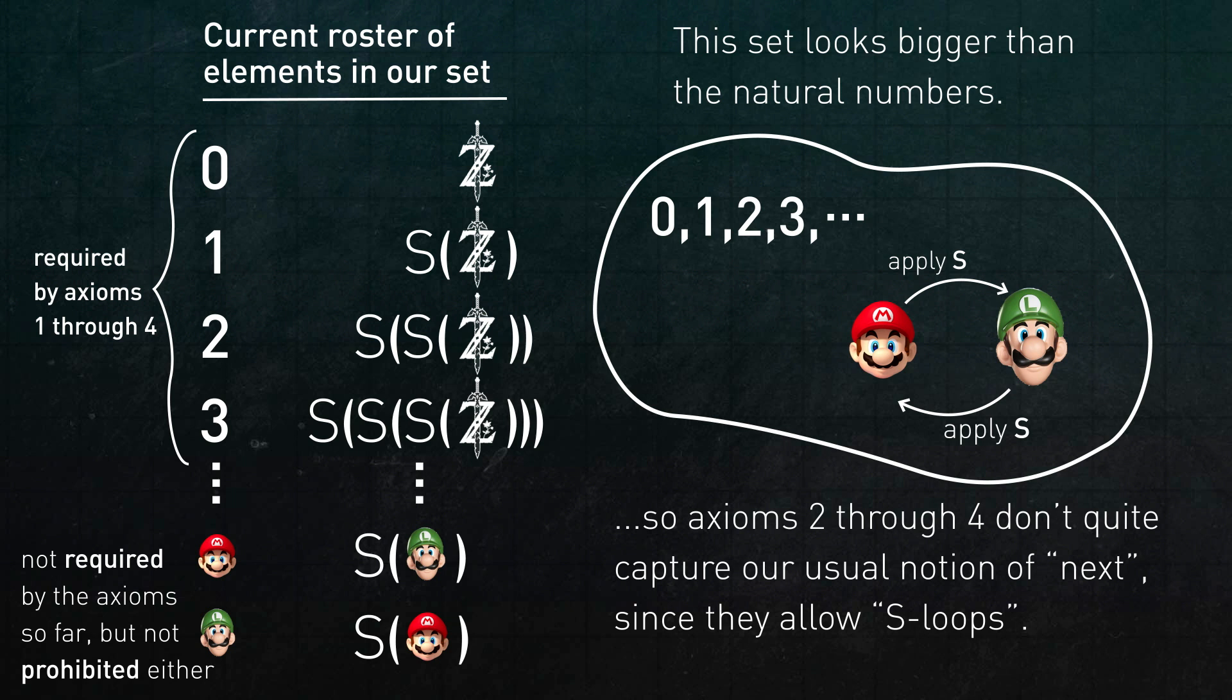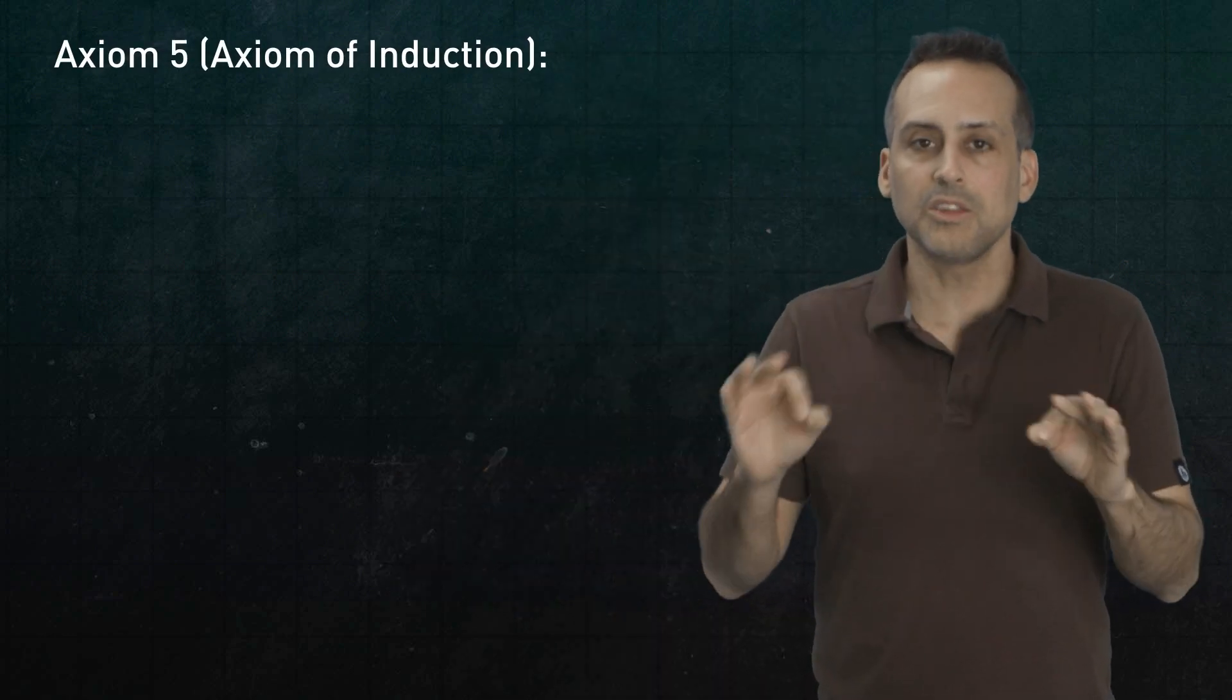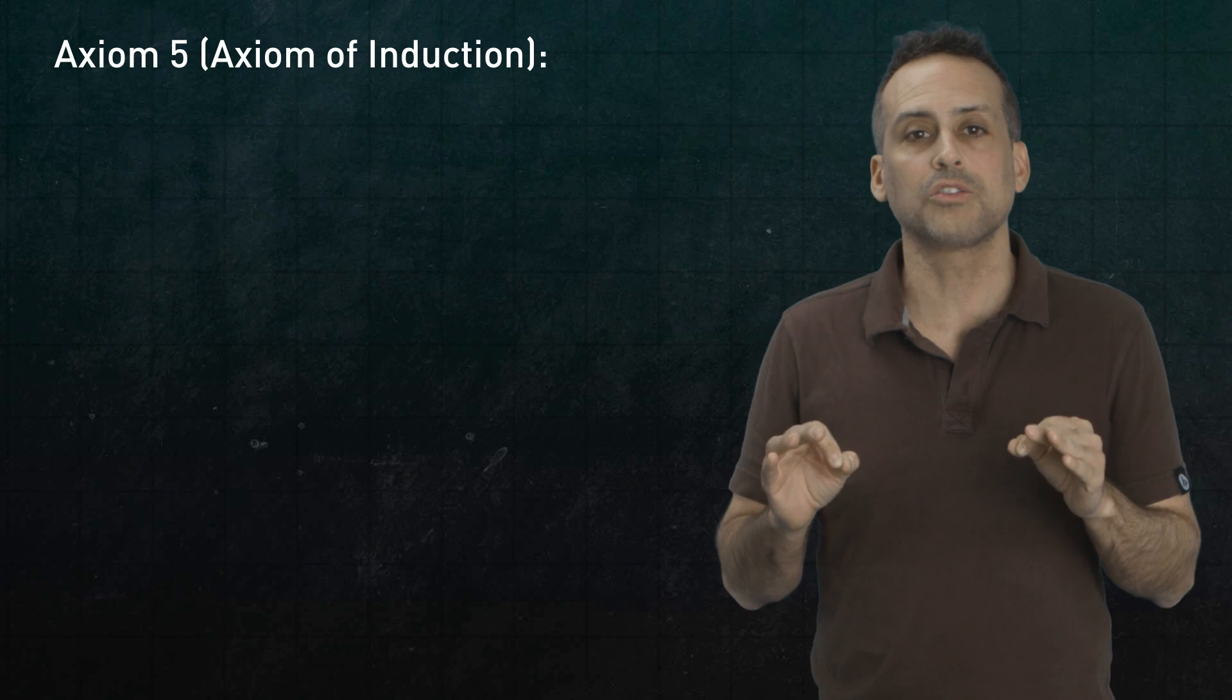So axioms 2 through 4 apparently do not quite capture the idea of next, because they would allow Mario and Luigi to be in the set but detached from everybody else, so to speak. To prevent this, we use Peano's fifth axiom, also known as the axiom of induction, which cleans up this mess by fiat in a very subtle way.